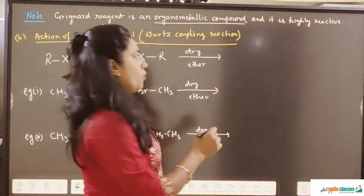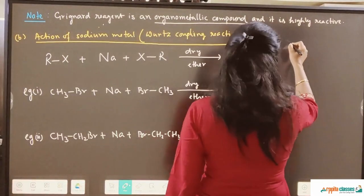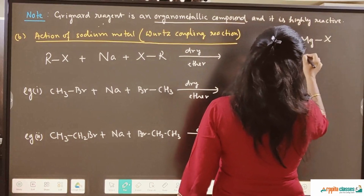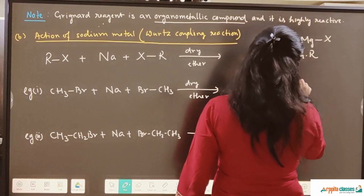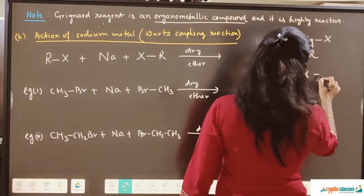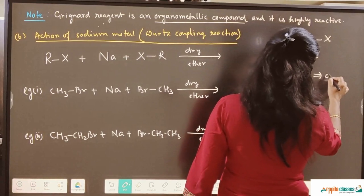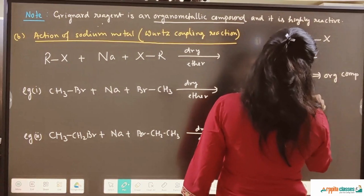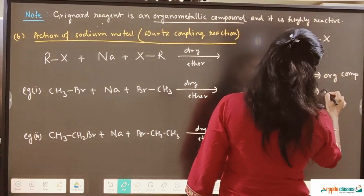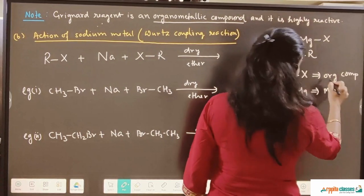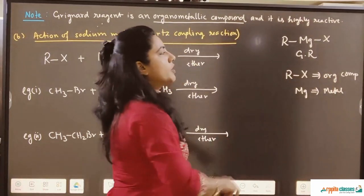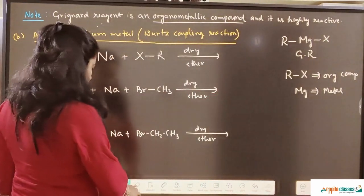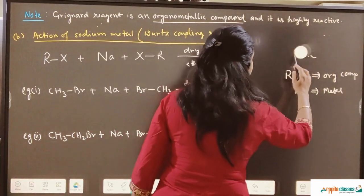Note that Grignard reagent is an organometallic compound — this is called an organometallic compound and it is highly reactive. This question can come in an MCQ. Why is it called an organometallic compound? Because it is formed by RX, which is an organic compound, and Mg, which is a metal. Combining these two gives an organometallic compound. It is very, very reactive — that you need to remember.